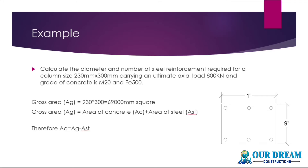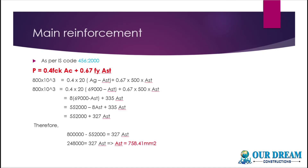Let's see the equation again. Now, for the main rod — longitudinal bar or vertical rod — we use the formula: Pu = 0.4·fck·Ac + 0.67·fy·Ast. This equation relates the load to the area of concrete and steel, grade of concrete, and grade of steel. Area of concrete is Ag − Ast. If we don't know Ast, Ast equals the value we solve from this equation.